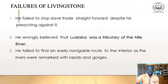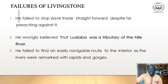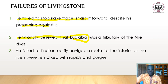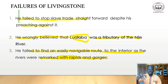Despite his successes, Livingstone had failures. He failed to stop slave trade despite preaching against it. He wrongly believed that the Lualaba River was the source of the Nile — it was not. He also failed to find an easily navigable route to the interior, as rivers were marked by rapids and gorges, making them unnavigable.